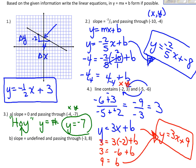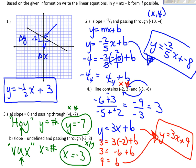For an undefined slope, think of the box — it reminds you it's a vertical line with an undefined slope. The equation of a vertical line is x equals a number. Looking at the ordered pair — x comma y, always alphabetical — x is negative 3, so the equation is x equals negative 3.